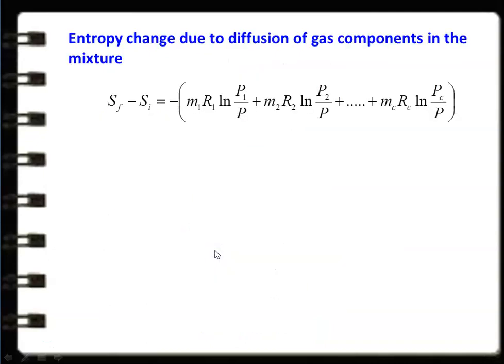Entropy change due to diffusion of gas components in the mixture: when you have a mixture of different gases, the gas molecules move from place to place, causing a change in entropy. The entropy change is: Sf − Si = −[M1·R1·ln(P1/P) + M2·R2·ln(P2/P) + ... + Mc·Rc·ln(Pc/P)], where P is the total pressure, M1 is the mass of the first gas, R1 is its gas constant, and P1 is its partial pressure.